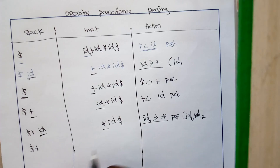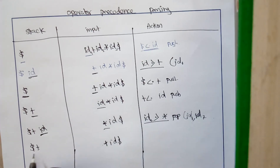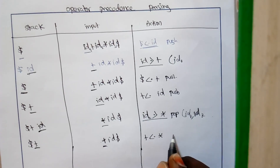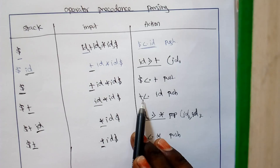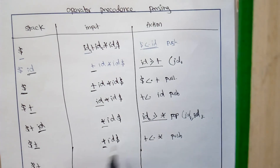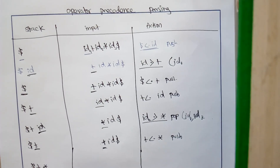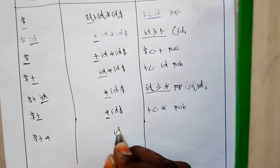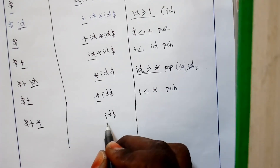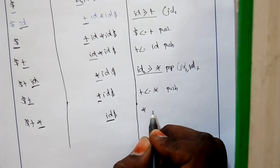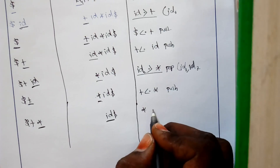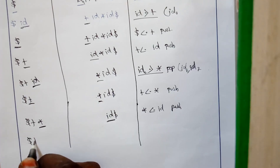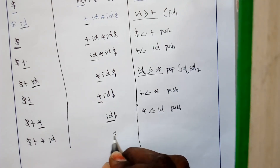When you compare plus and star, plus has a lesser precedence over star, so we push star into the stack. Now the input has id and dollar. When you compare star and id, star has a lesser precedence over id, so we push id into the stack. The stack is now dollar plus star id, and the remaining input is dollar.